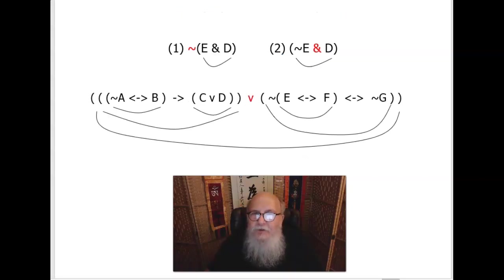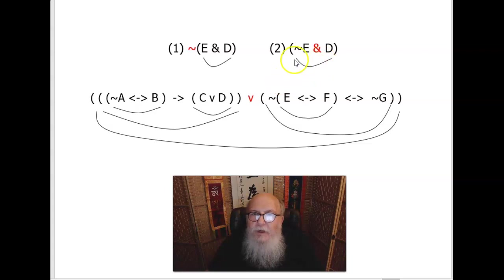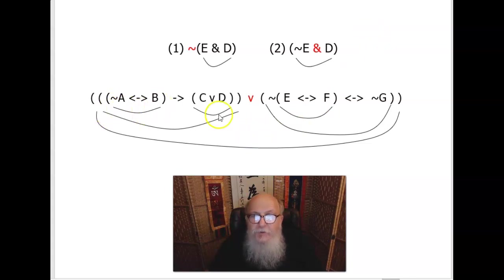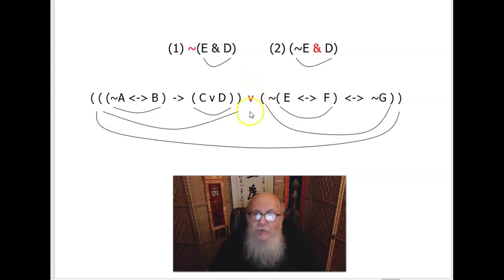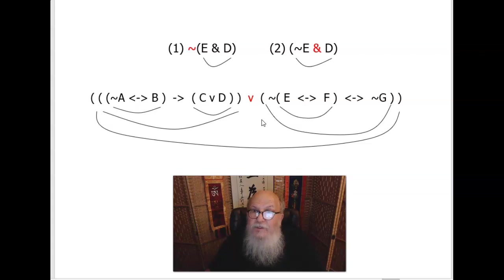You want to pay special attention to negations, because they're very tricky. Notice these two expressions: in one, you pair the parentheses and the last uncovered operator is the negation — so 'not (A and D),' that whole unit is negated. But in the other, the 'not' is just joined to E, and the 'and' is the major operator. For a more complex one: we join those parentheses, and those, and those, and the last uncovered operator is the major operator. So the whole expression reads: 'Either (not A if and only if B, then C or D) or (not E is equivalent to F is equivalent to not G).' That's a mouthful.